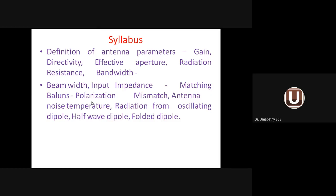We identify polarization mismatch using a factor called polarization loss factor (PLF), where PLF = cos²(ψ), and ψ is the angle difference between the incoming electromagnetic wave and the receiving antenna. If ψ = 0°, maximum radiation is absorbed; if ψ = 90°, no radiation is received; between 0° and 90°, moderate radiation exists.